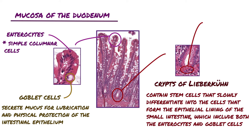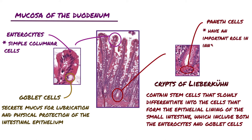Some of the crypts in the small intestine have cells with very eosinophilic, or pink, granules. These cells are called Paneth cells. Paneth cells are exocrine cells with large eosinophilic secretory granules in their apical cytoplasm. Paneth cell granules release molecules that bind and break down membranes of microorganisms and bacterial cell walls. Paneth cells have an important role in innate immunity and in regulating the microenvironment of the intestinal crypts.